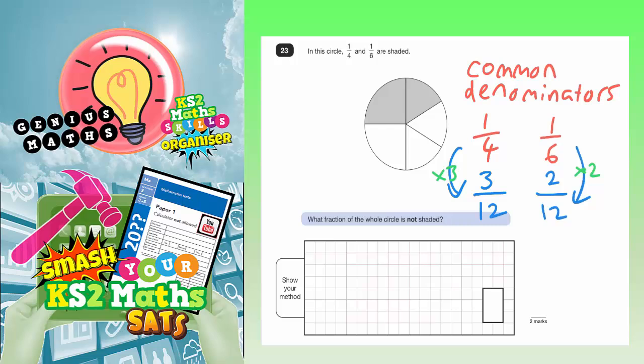Now from there, it's quite straightforward. Because if a quarter has been shaded, that's three twelfths. And if a sixth has been shaded, that's two twelfths. So all together, that's five twelfths. So if you add those together, you've got five twelfths shaded. So this fraction here must be worth five twelfths.